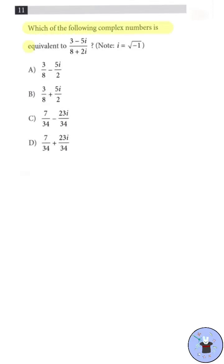Which of the following complex numbers is equivalent to 3 minus 5i divided by 8 plus 2i? Could you solve this?